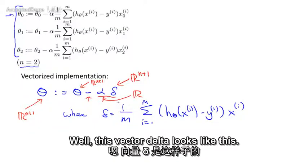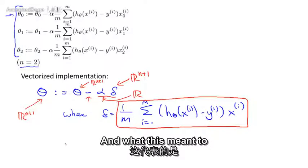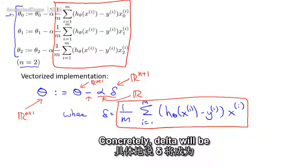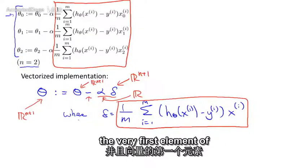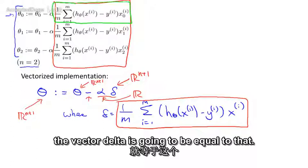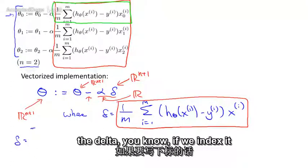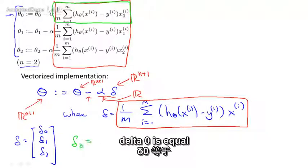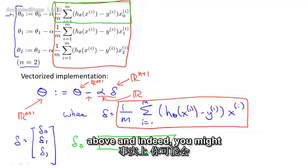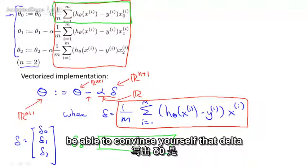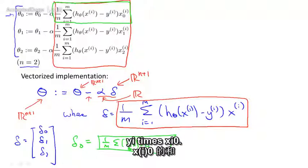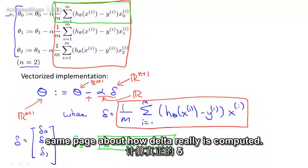So what is the vector delta? Well, this vector delta looks like this. And what it's meant to be is really meant to be this thing over here. Concretely, delta will be an n plus 1 dimensional vector, and the very first element of the vector delta is going to be equal to that. So if we have that delta, if we index it from 0, if it's delta 0, delta 1, delta 2, what I want is that delta 0 is equal to this first box in green up above. And indeed, you might be able to convince yourself that delta 0 is this 1 over m sum of h of xi minus yi times xi 0.